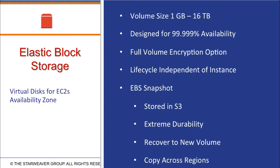To further increase durability, EBS has snapshots. Anytime you want, you can have an EBS snapshot taken — a snapshot of all the files on the volume — and that snapshot is saved as an object in S3 with 11.9 durability. Anytime you need to, you can create an EBS volume from a snapshot. If you get data corruption or somebody deleted important files, just create a new EBS volume from the snapshot and replace the old one. It's very easy to recover data to a new volume.